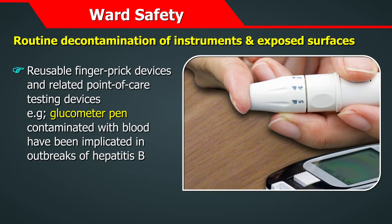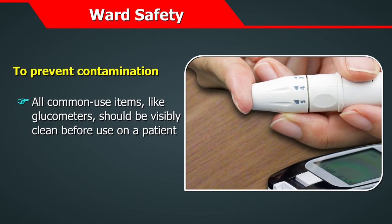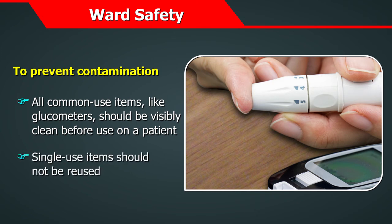Reusable finger prick devices and related point-of-care testing devices — for example, glucometers — contaminated with blood have been implicated in outbreaks of hepatitis B. To prevent contamination, all common-use items like glucometers should be visibly cleaned before use on a patient, and a single-use item should not be reused.